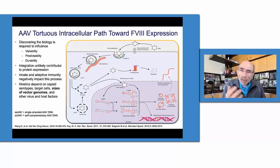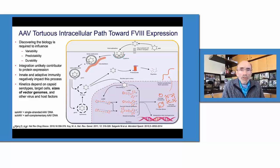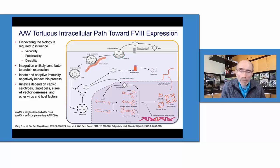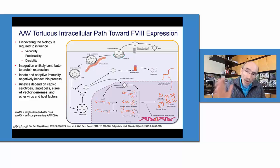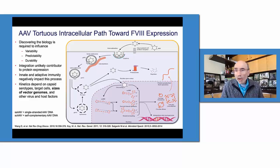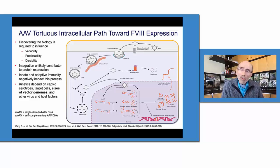AAV follows this pathway as well. We have binding to a cell surface receptor. We have endosomes going from early to late to lysosomes that will digest up the virus and destroy it. We also have escape from endosomes, and some of the viral capsids can go into the proteasome where they're digested and displayed in the context of HLA class 1 on the surfaces of cells, which triggers a cytotoxic T cell response, often used to contain a viral infection.